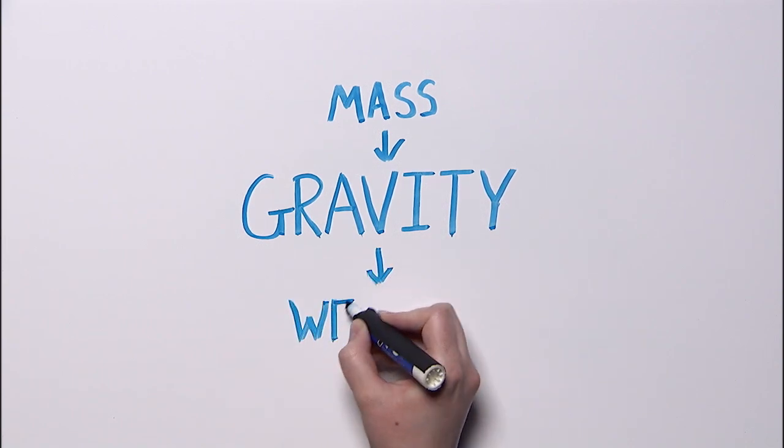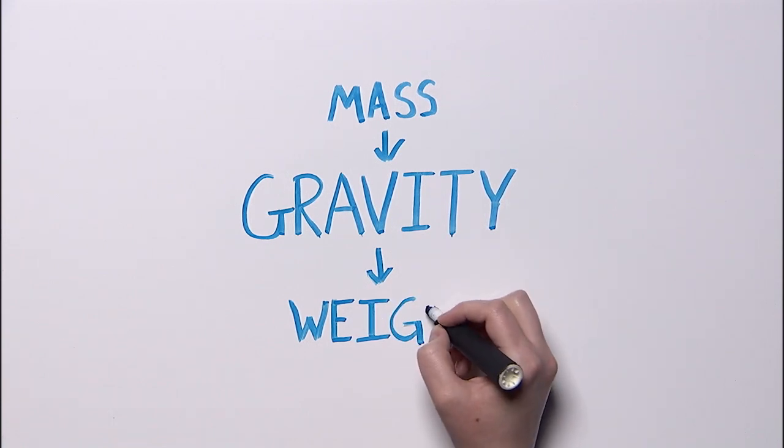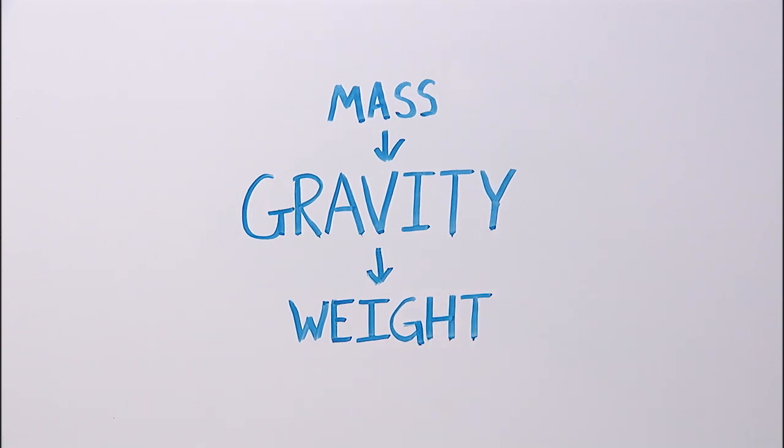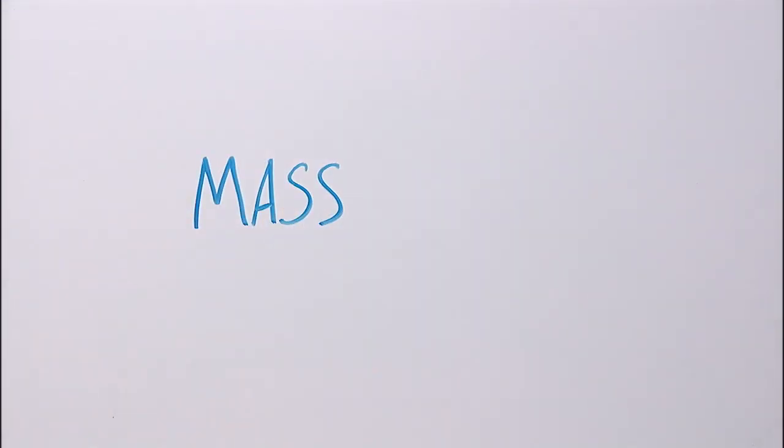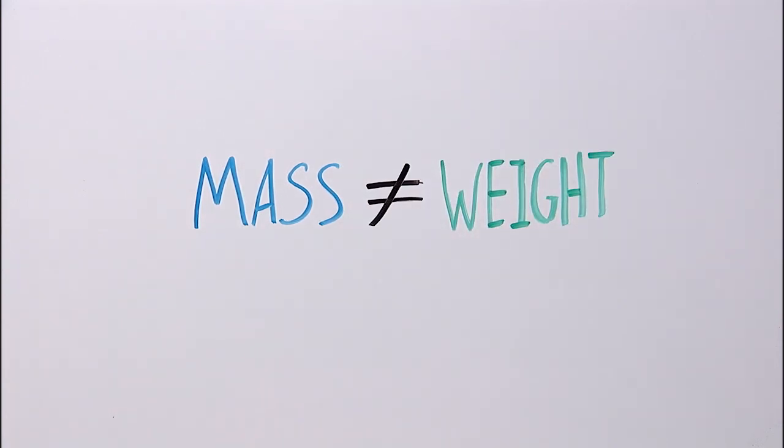So, to sum up, mass causes gravity. Gravity causes weight. Now, since mass and weight are directly related, a lot of people confuse them and use them interchangeably. That doesn't change the fact that they are completely different measurements with completely different units of measurement.